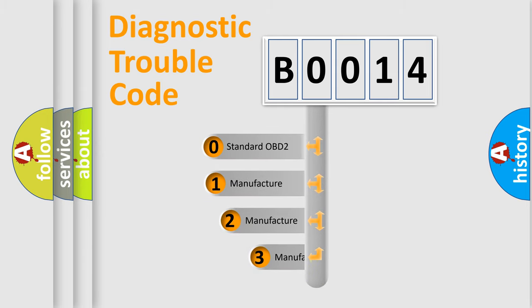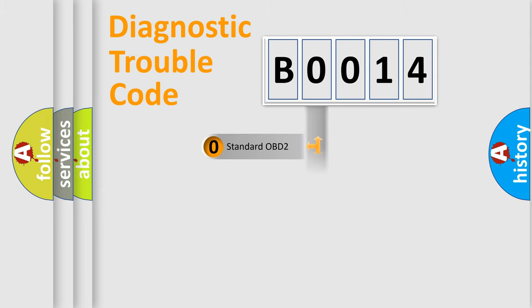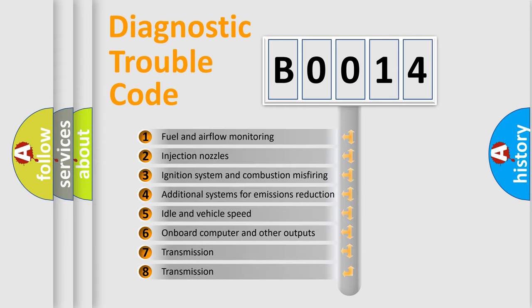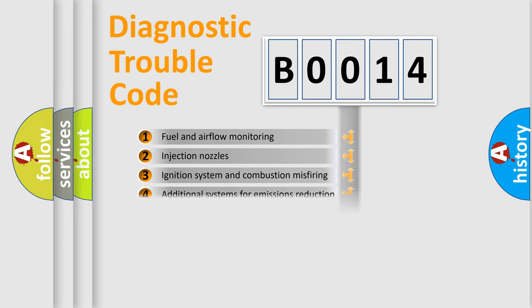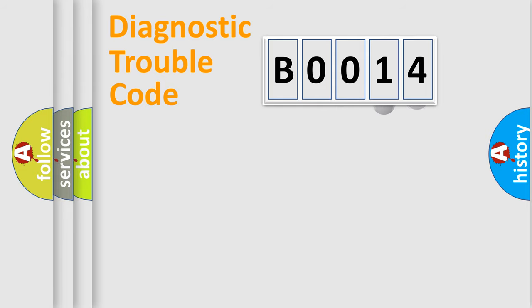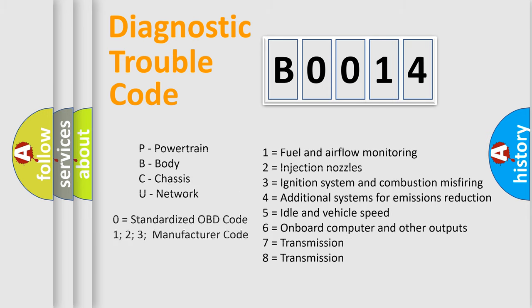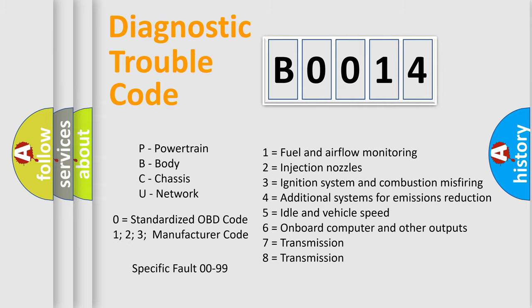If the second character is expressed as zero, it is a standardized error. In the case of numbers 1, 2, or 3, it is a more manufacturer-specific expression of a car-specific error. The third character specifies a subset of errors. This distribution is valid only for the standardized DTC code. Only the last two characters define the specific fault of the group. This division is valid only if the second character is expressed by the number zero.